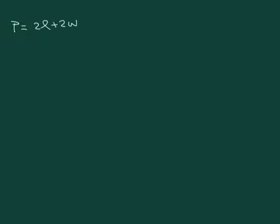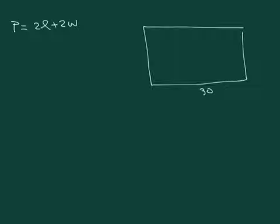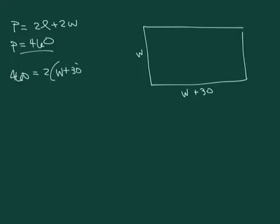So the length of the largest regulation soccer field is 30 yards greater than the width. So let's draw that. So if the width is w, the length is going to be w plus 30. And the perimeter is 460. So p equals 460. So let's go ahead and write what we have. 460 equals 2 times the length. Length is w plus 30 plus 2 times the width.